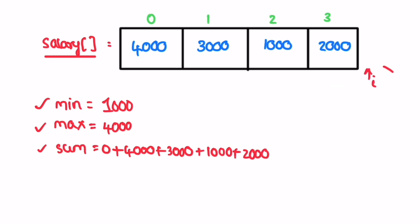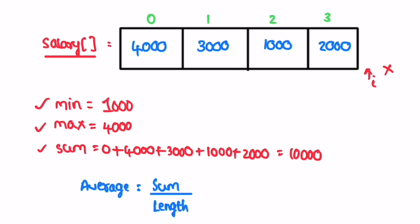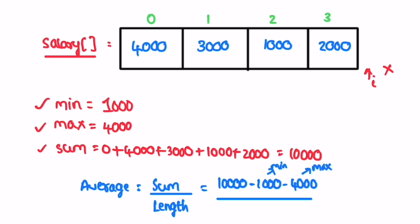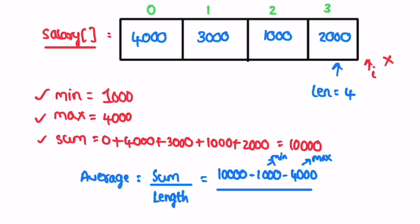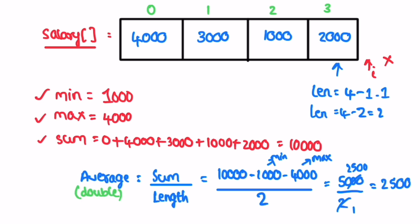We've reached the end of the array. We now have the updated values: min, max, and sum. The average formula is sum divided by length, but we need to exclude the minimum and maximum. The new sum is the current sum (10,000) minus min minus max. The new length is 4 minus 2 (removing one count each for min and max) equals 2. So 5000 divided by 2 gives an average of 2500.0.